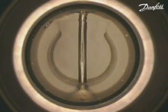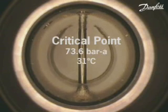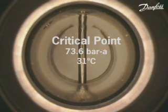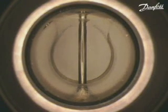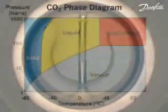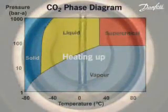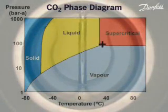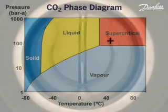CO2 now exists at a pressure of 73.6 bar absolute and a temperature of 31 degrees C. After a further small increase in temperature, all the CO2 present in the cell is now in the supercritical phase.